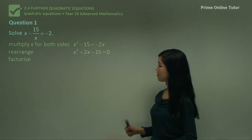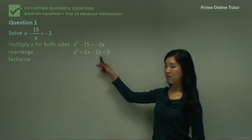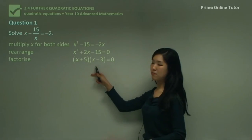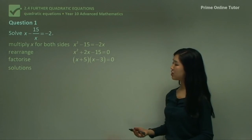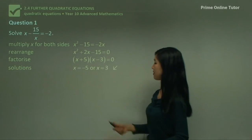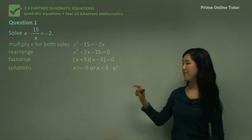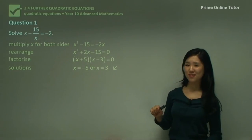Now factorize it. What are the factors of 15? I think 5 and 3. So I'll have (x + 5)(x - 3) = 0. Now solutions, what are the solutions? x is -5 or x is positive 3. That's our two solutions. So very simple, isn't it?